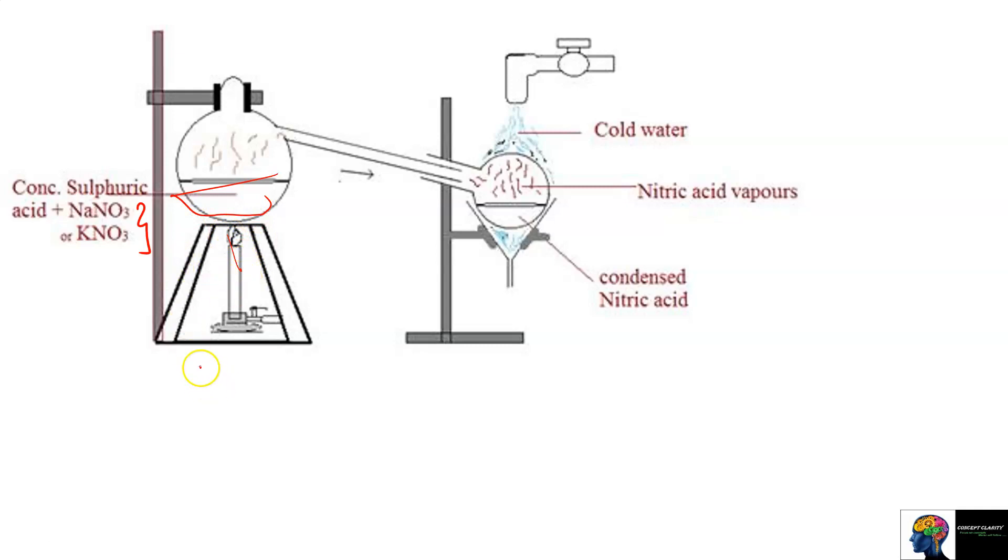What happens when heat is provided? Sulfuric acid is a non-volatile acid, so what happens here? Nitric acid passes through the tube and moves down. When it moves down it is very hot, so we release cold water with the help of a tap so that nitric acid cools down and condenses to form the acid in liquid form, and we can collect it in a beaker or flask.